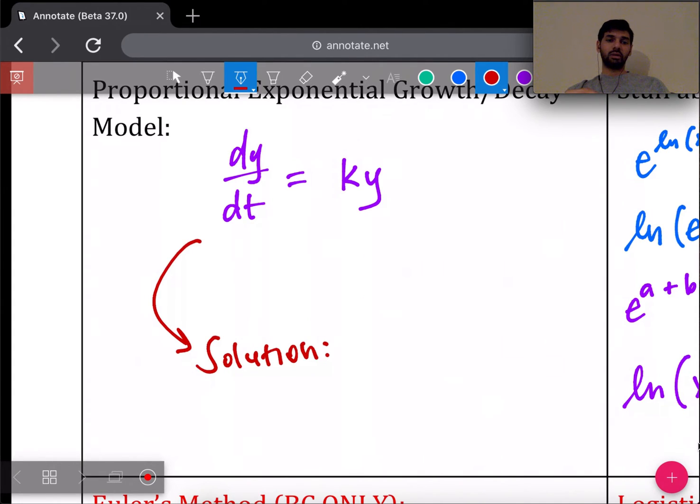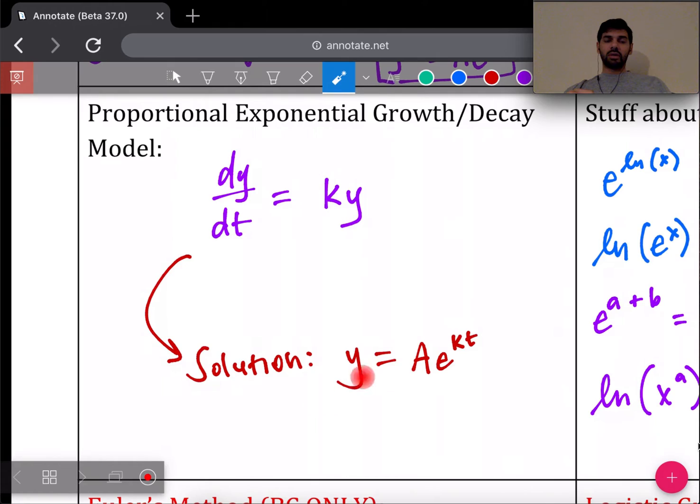On the AP test, you don't really need to show how you solved for this. You can just jump straight to its solution, which is always going to be y equals some constant A times e^(kt). All you're left to do is figure out what that constant A is. You'll know what k is because it'll give it to you in the problem, and t is just the other variable.